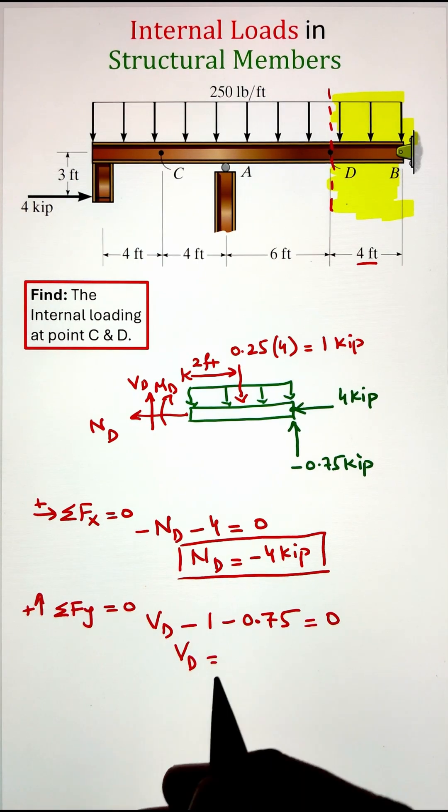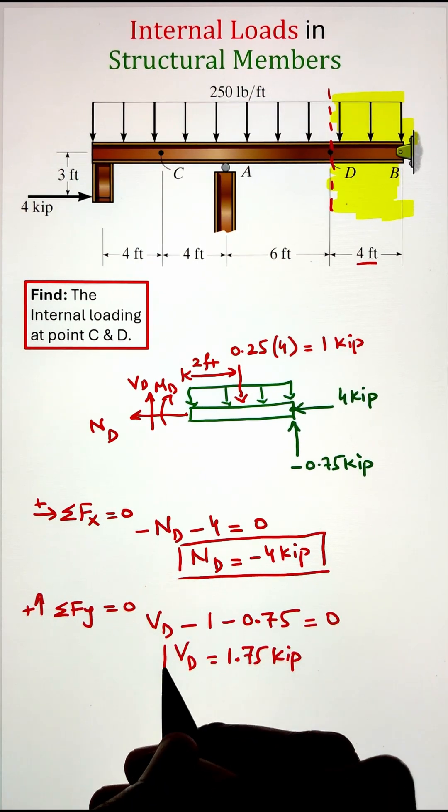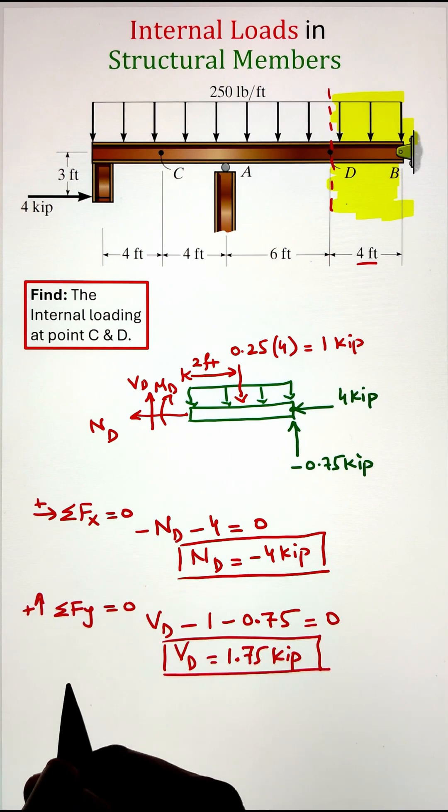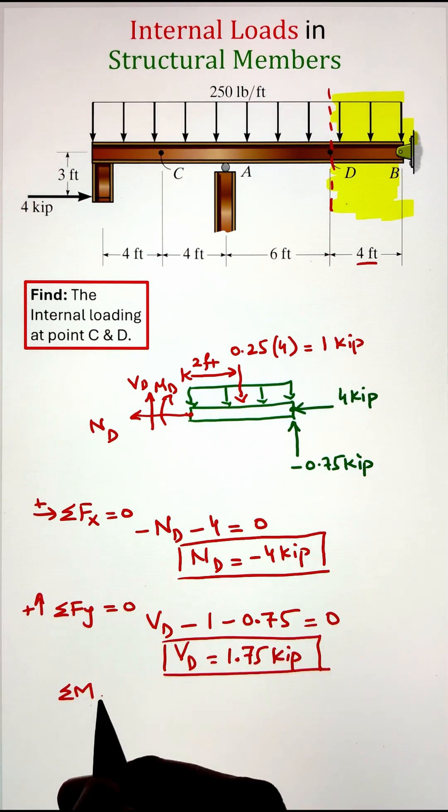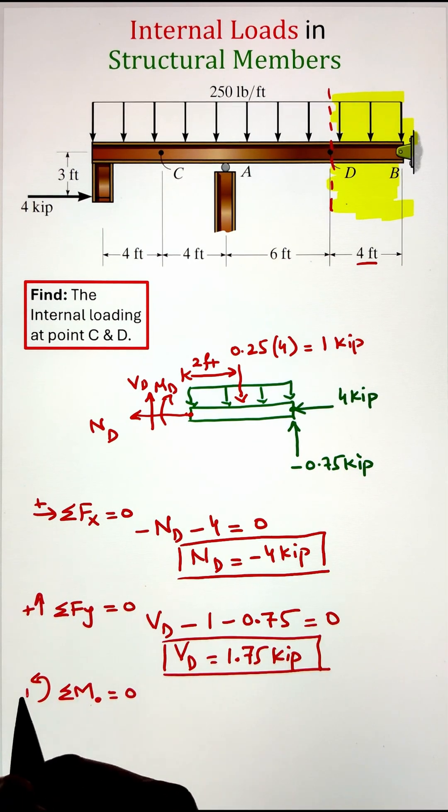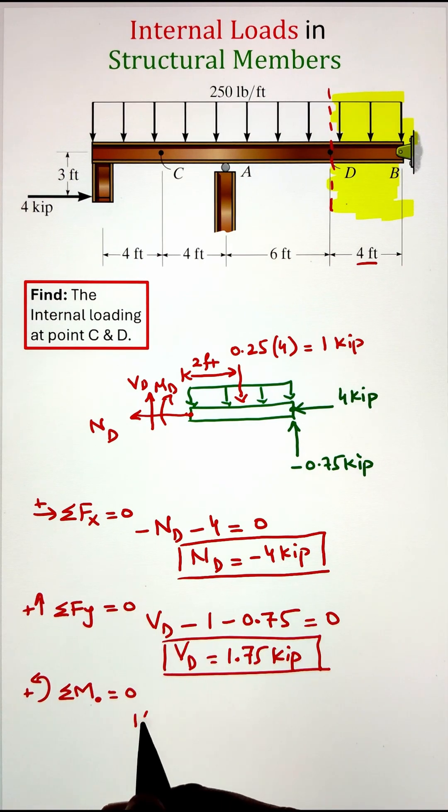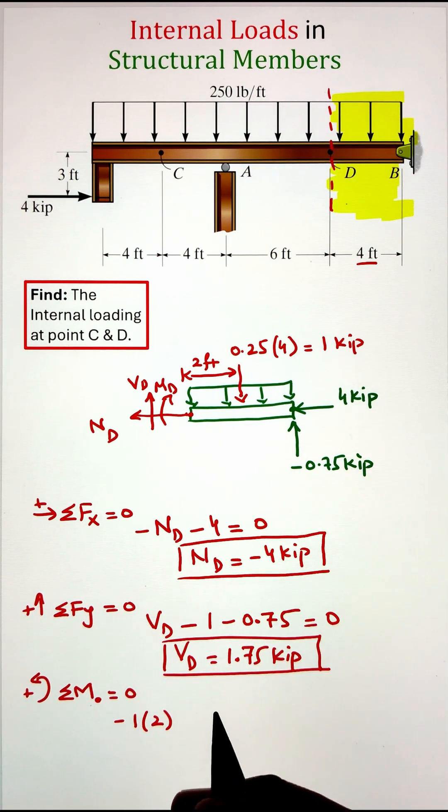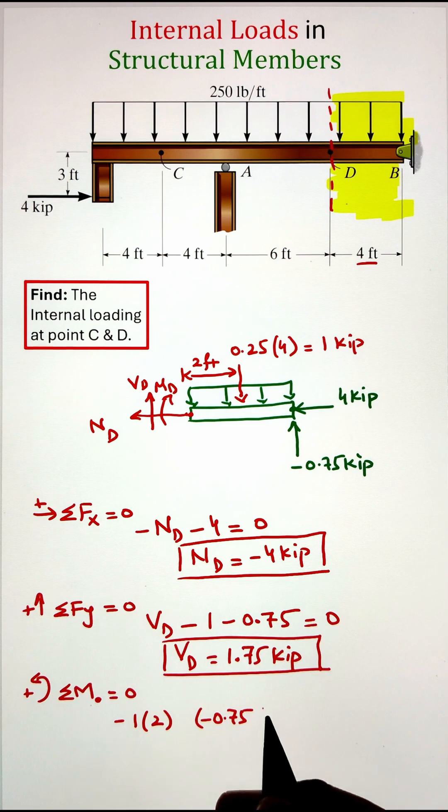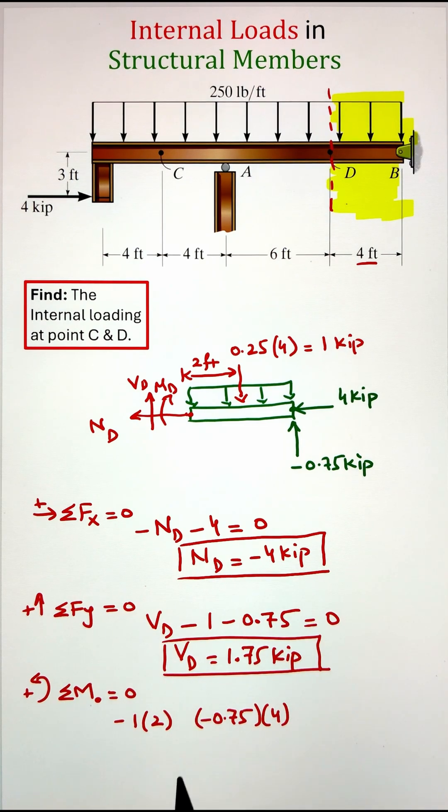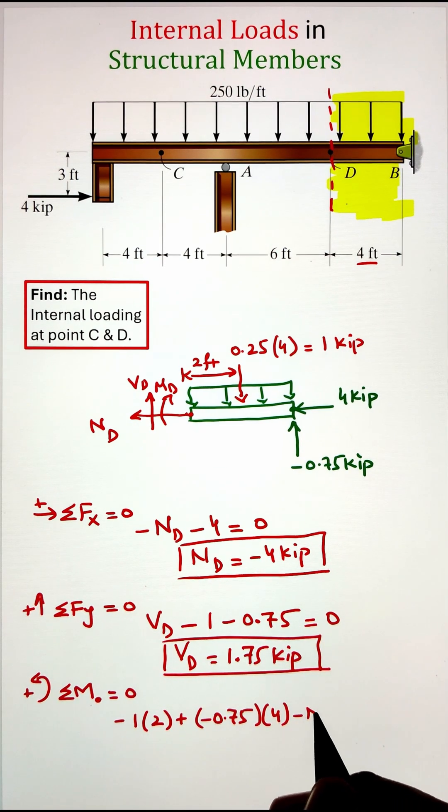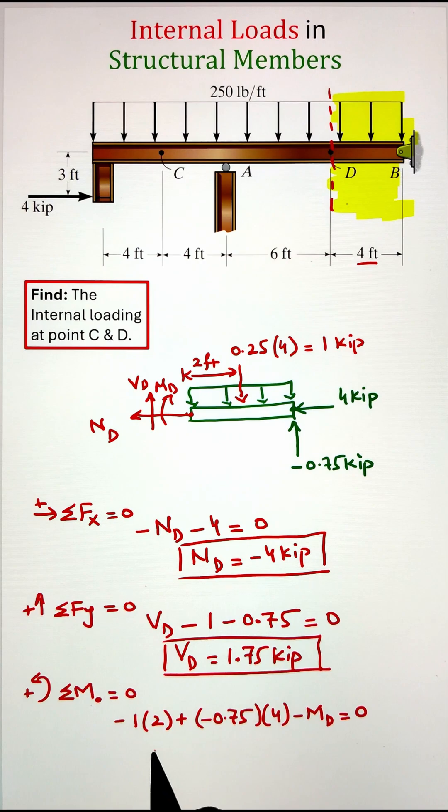Finally, we can do the summation of moment at the cut and solve for our couple moment MD. Here the point load of 1 kilopound with a moment arm of 2 will create a clockwise moment. Next we have a force of negative 0.75 kilopounds with a moment arm of 4 that is creating a counterclockwise moment. And finally, we have our couple moment MD in the clockwise direction. Simplifying gives us the value of MD as negative 500 pound-feet.